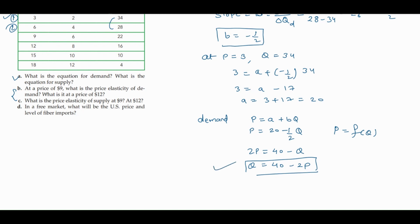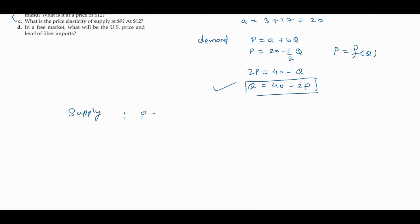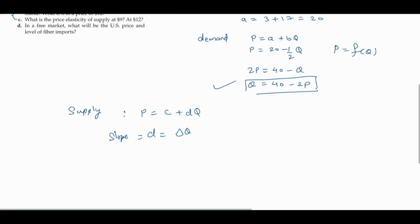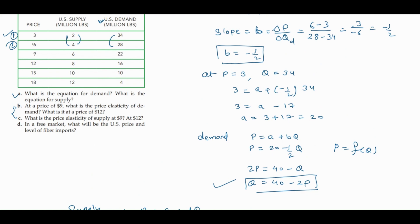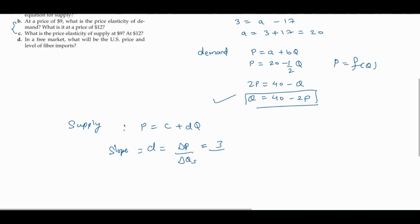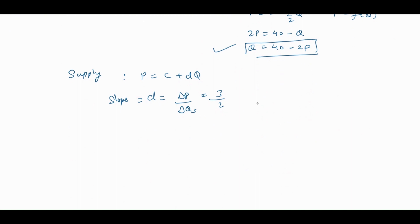Similarly, we can find the supply equation using the same process. For supply, let p equals c plus d·q, where d is the slope of the supply curve. The slope formula is change in price divided by change in quantity supplied. The change in price is the same: 3. For change in quantity supplied, quantity has increased from 2 to 4, so the difference is plus 2 (4 minus 2). So slope d equals 3/2.